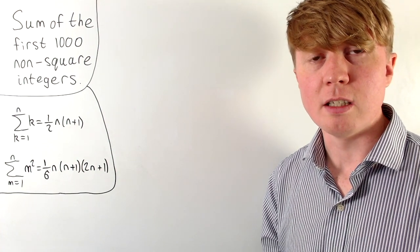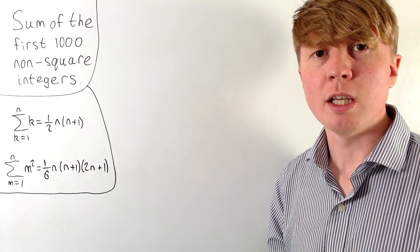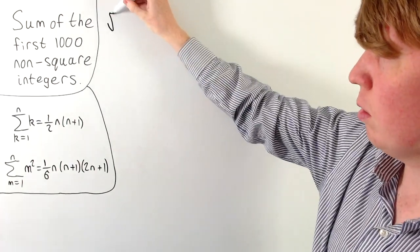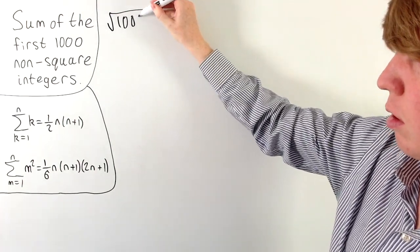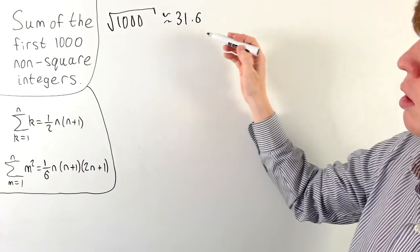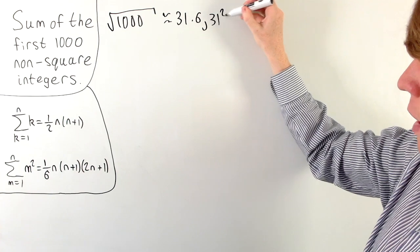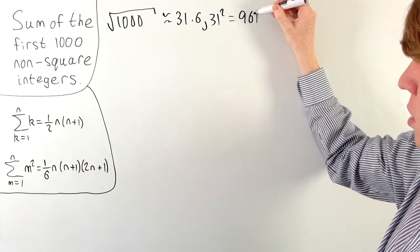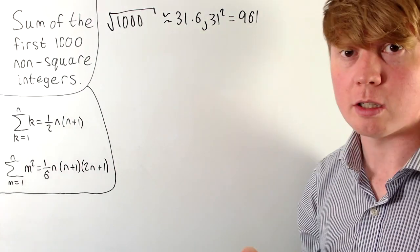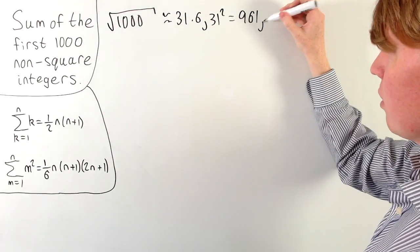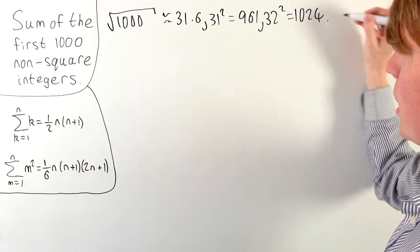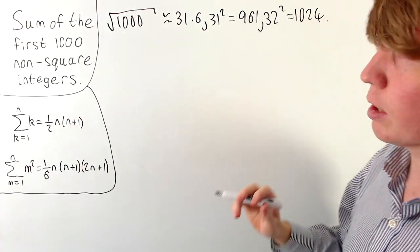First we need to calculate how many square numbers there are going to be. If we go up to 1,000, the square root of 1,000 is around 31.6. So 31² = 961 — we need to get rid of all square numbers from 1² up to 31². But 32² = 1,024, so we might not need to worry about that one.